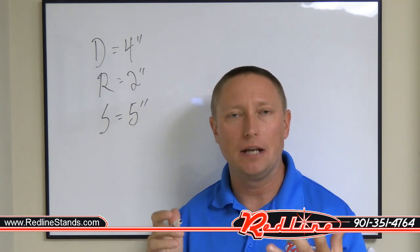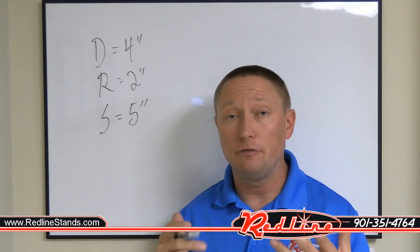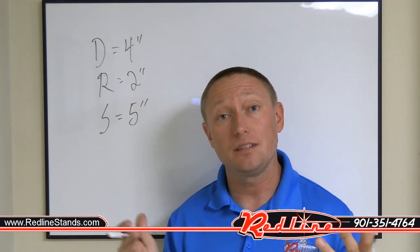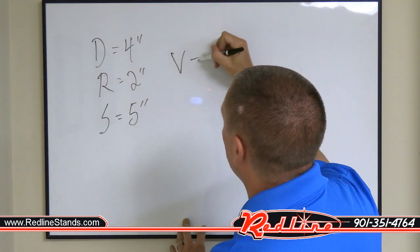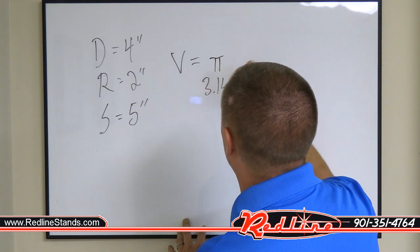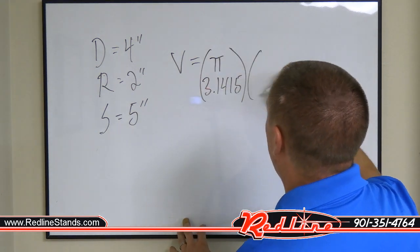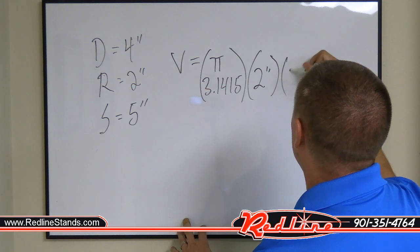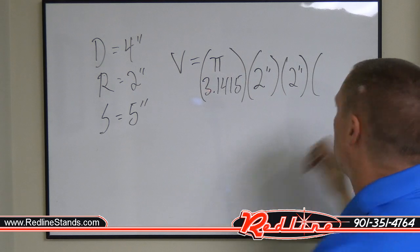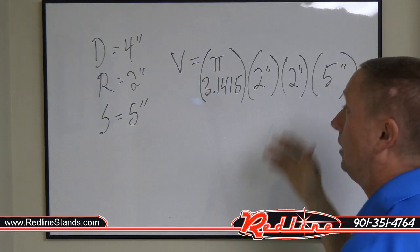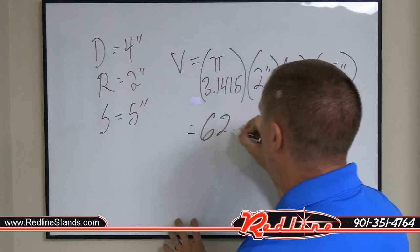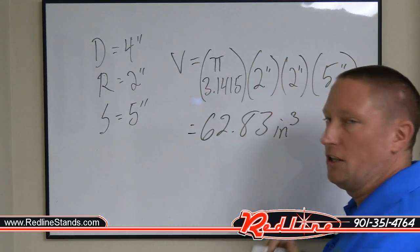Now let's compute the volume of fluid inside this fictitious hydraulic cylinder. You need the formula for a circle, which is π r², then multiply by the length — in this case the stroke. So: volume equals π (that's 3.1415), multiplied by the radius squared (two inches times two inches), then multiplied by our stroke of five inches.